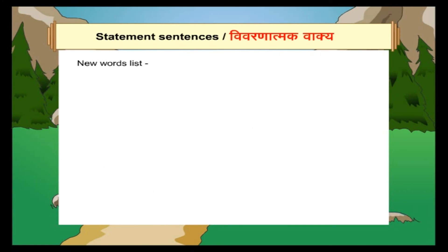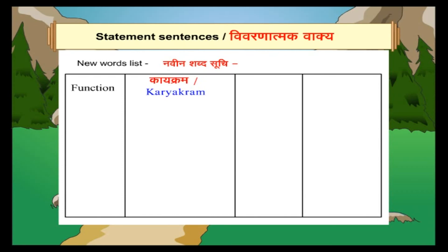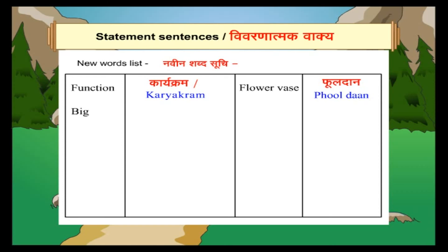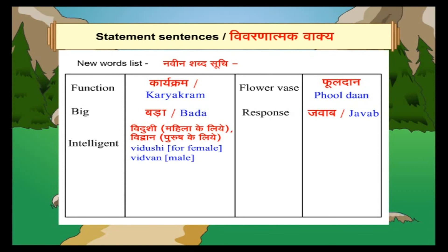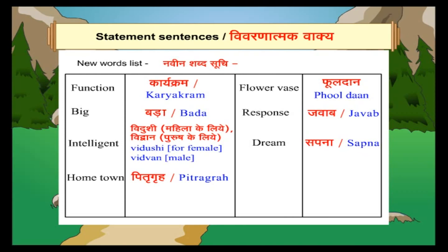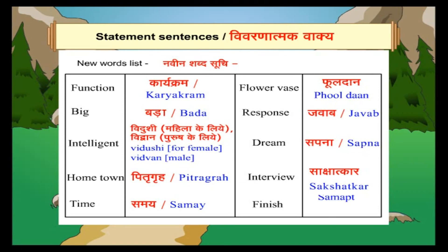New Words List (नवीन शब्द सूची): Function – कार्यक्रम. Flowervase – फूलदान. Big – बड़ा. Response – जवाब. Intelligent – विदुषी (for a foreign/female), विद्वान (for a male). Dream – सपना. Hometown – पित्रग्रह. Interview – साक्षात्कार. Time – समय. Finish – समाप्त.